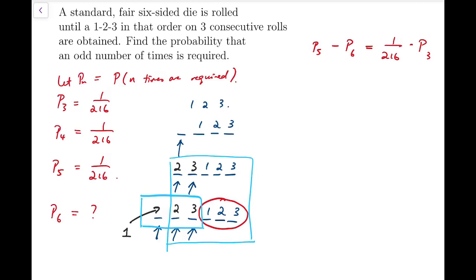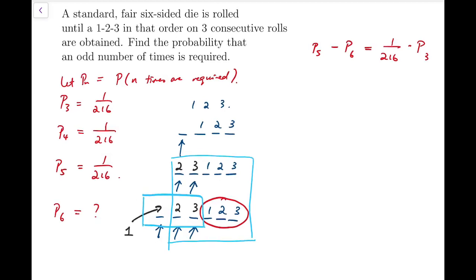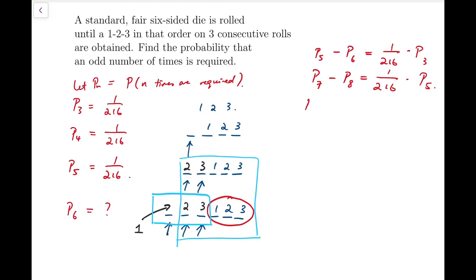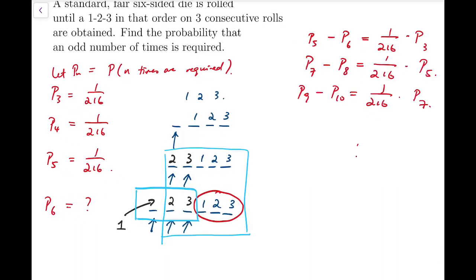And in fact, we can actually do something similar for, say, P_7 minus P_8, and that's again 1 over 216 times, and looking at the pattern, that should be P_5. Because what happens in the red circle could be arbitrarily long, and the number of rows inside the red circle could be arbitrarily large. So we can keep looping this, iterating this with bigger cases. Say, P_9 minus P_10 equals 1 over 216 times P_7, and so on.